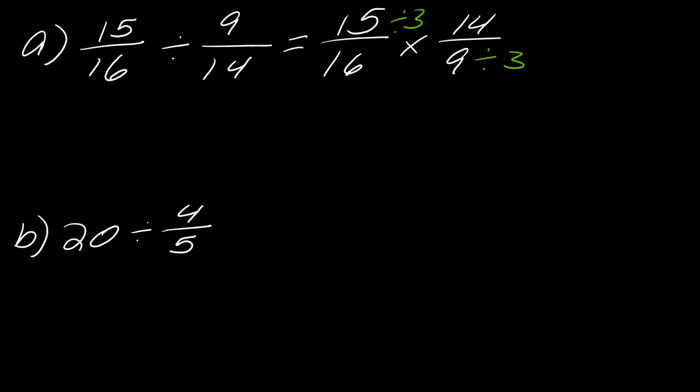Okay. So, then this is going to give me 5 over 8 times 7 over 3. And now, I can multiply straight across. So, this will become 35 over 24. And now, we're done.